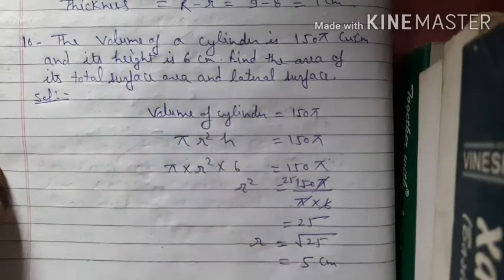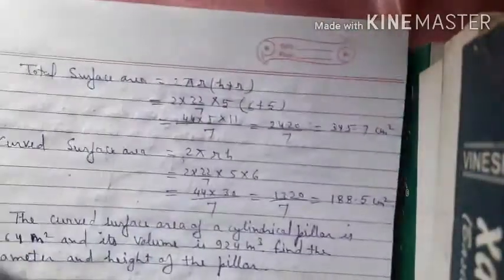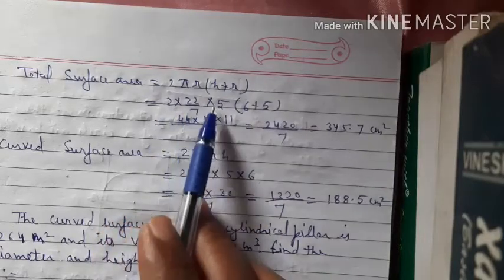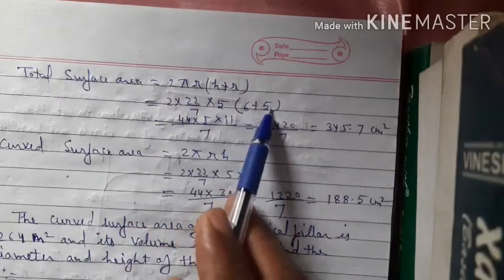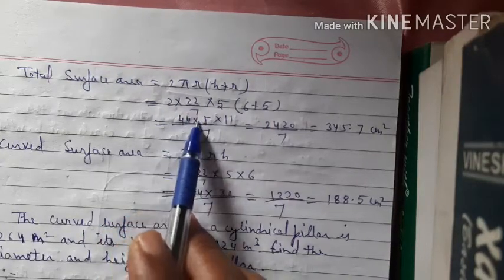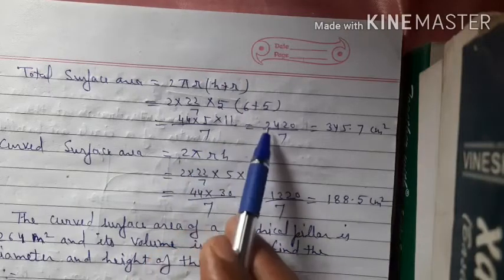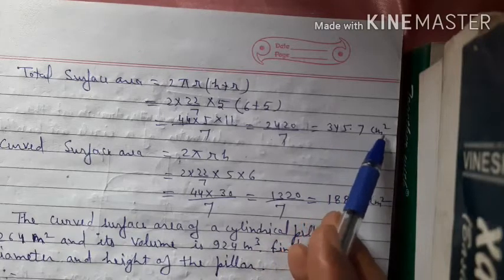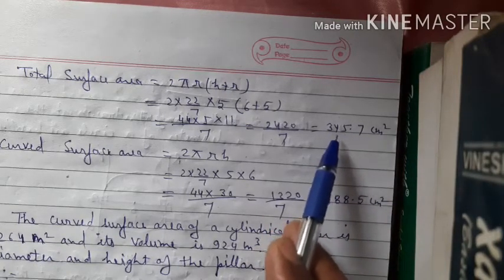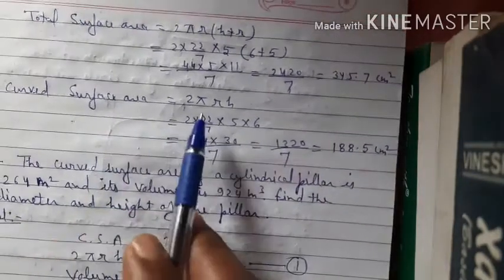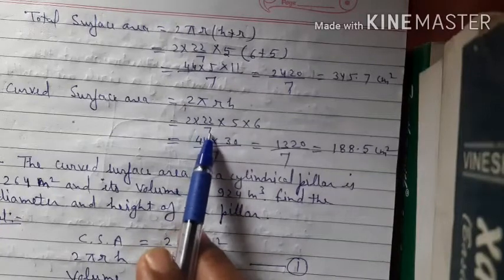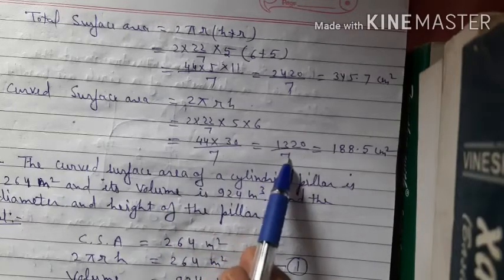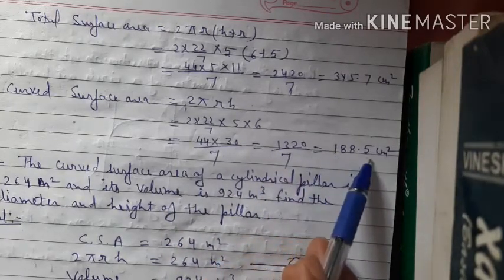Total surface area = 2πr(h + r) = 2 × (22/7) × 5 × (6 + 5) = 2 × 22 × 5 × 11 / 7 = 2420/7 ≈ 345.7 cm². Lateral (curved) surface area = 2πrh = 2 × (22/7) × 5 × 6 = 1320/7 ≈ 188.5 cm².